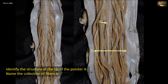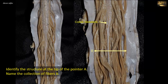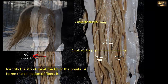Identify the structure at the tip of pointer A and name the collection of fibers B. This is a dissection of the lower, caudal end of the spinal cord. Note that the cylindrical cord tapers at its lower end to form the conus medullaris. Below the level of the intervertebral disc between L1 and L2 in the adult, the tip of the conus medullaris continues as a connective tissue called the filum terminale. The filum terminale, together with lumbar, sacral, and coccygeal nerve roots, continues down the vertebral canal past the conus to form the cauda equina, which means the horse tail.